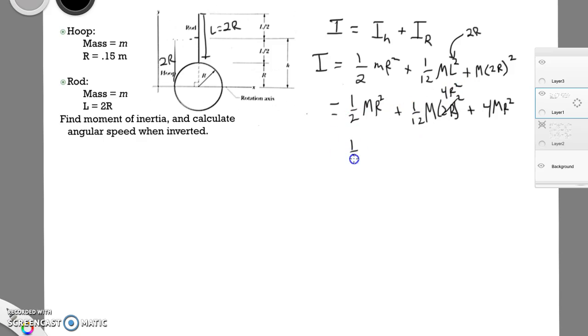Which means that this right here could also be 4R squared. So we get 1 half MR squared. 1 12th times the 4 is going to be 1 third MR squared. And then we have the 4 MR squared.